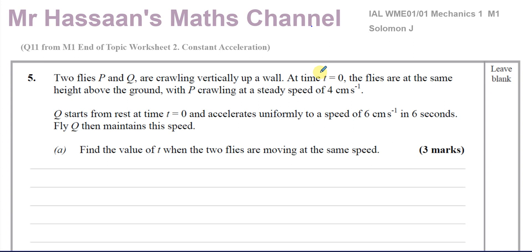It says two flies, P and Q, are crawling vertically up a wall. At time T equals 0, the flies are at the same height above the ground, with P crawling at a steady speed of 4 cm per second. Q starts from rest at time equals 0 and accelerates uniformly to a speed of 6 cm per second in 6 seconds. Fly Q then maintains this speed.